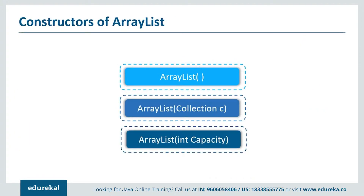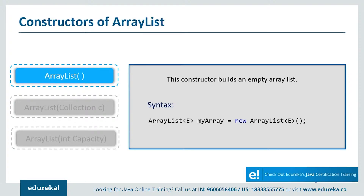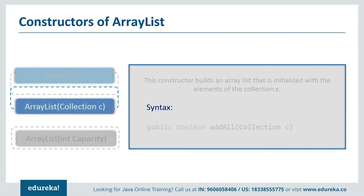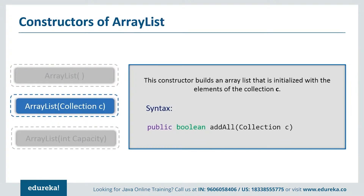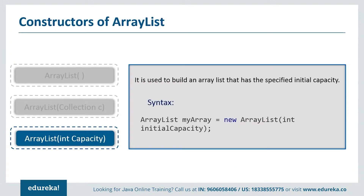Let's see the various constructors supported by Java ArrayList. The first is ArrayList() — this constructor builds an empty ArrayList. The reference 'myArray' holds references to objects of type E, with an initial capacity of 10 cells that increases as needed. Second is ArrayList(Collection c) — this constructor adds all elements of the specified collection C to the current ArrayList. Third is ArrayList(int capacity) — this builds an ArrayList with a specified initial capacity, which is the number of cells it starts with, and can expand beyond this capacity if more elements are added.